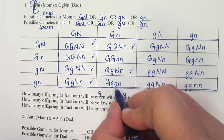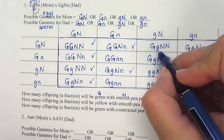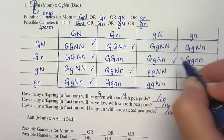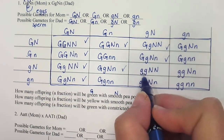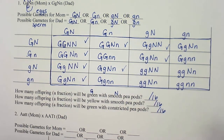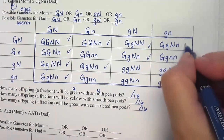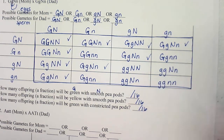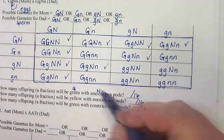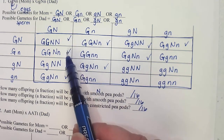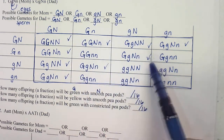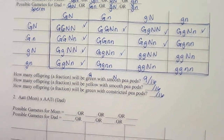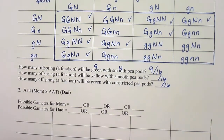Continuing the count — skipping any box with recessive Ns only or little Gs. So counting up: 1, 2, 3, 4, 5, 6, 7, 8, 9. Nine out of 16 will be dominant-dominant — green with smooth peapods.